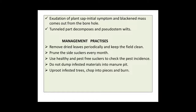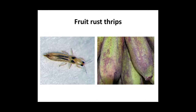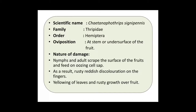The third and major pest of banana is Fruit Rust Thrips. In the first image we can see the fruit rust thrips, and in the second image the damaging symptoms on the fruit. The scientific name is Chaetanaphothrips signipennis. It belongs to family Thripidae and order Thysanoptera. Oviposition occurs at the stem or undersurface of the fruit.